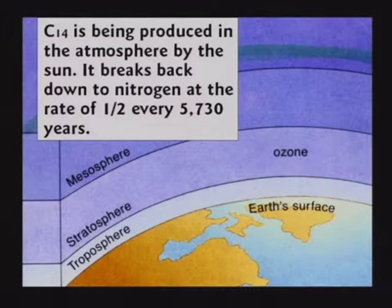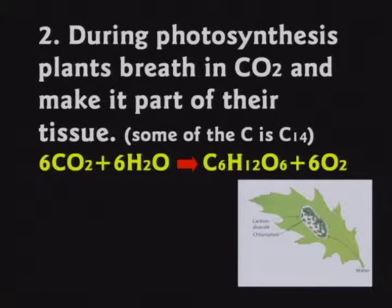If you had a pile of carbon-14 and waited 5,730 years, half of it would turn back to nitrogen, leaving half a pile. Wait another 5,700 years, half of that turns to nitrogen — you end up with a fourth. In theory it never goes to zero; it goes from half to fourth to eighth to sixteenth. Plants are always breathing in carbon-14 during photosynthesis — some is C-14, most is normal carbon-12.